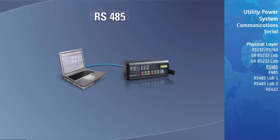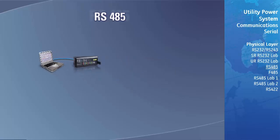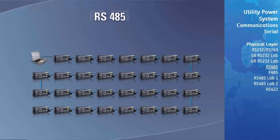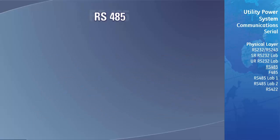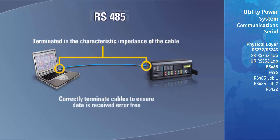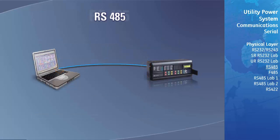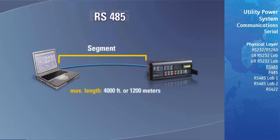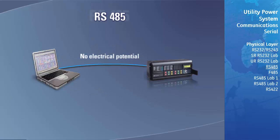The next physical standard we will look at is RS-485. Up to 32 devices are connected together in parallel or daisy-chained using a two-conductor cable terminated at either end in the characteristic impedance of the cable. It's important to correctly terminate the cables to ensure data is received error-free, and it's left up to the device manufacturer to specify how the cables are terminated. Each cable in the LAN is referred to as a segment, with the maximum segment length being 4,000 feet or 1,200 meters. The conductors are electrically floating, meaning they are not connected in any way to ground or signal common.